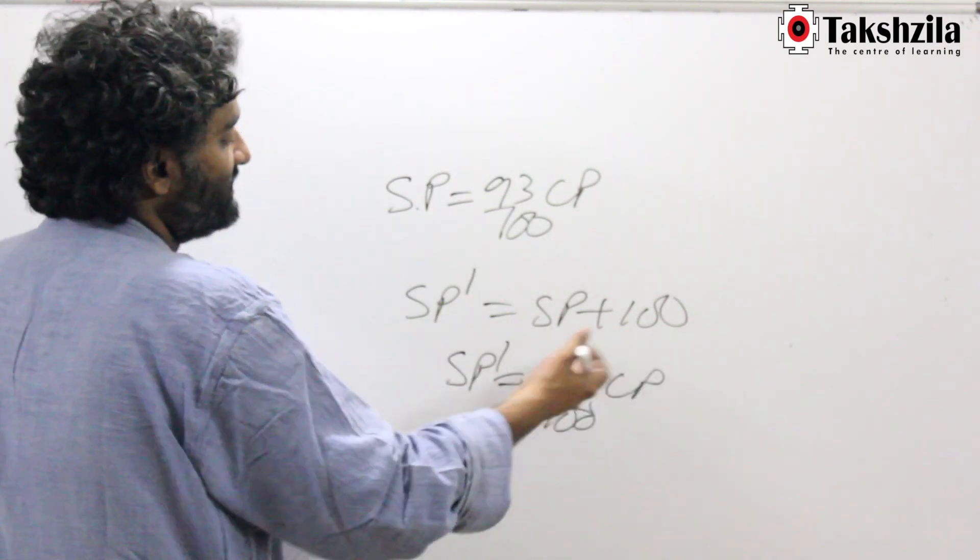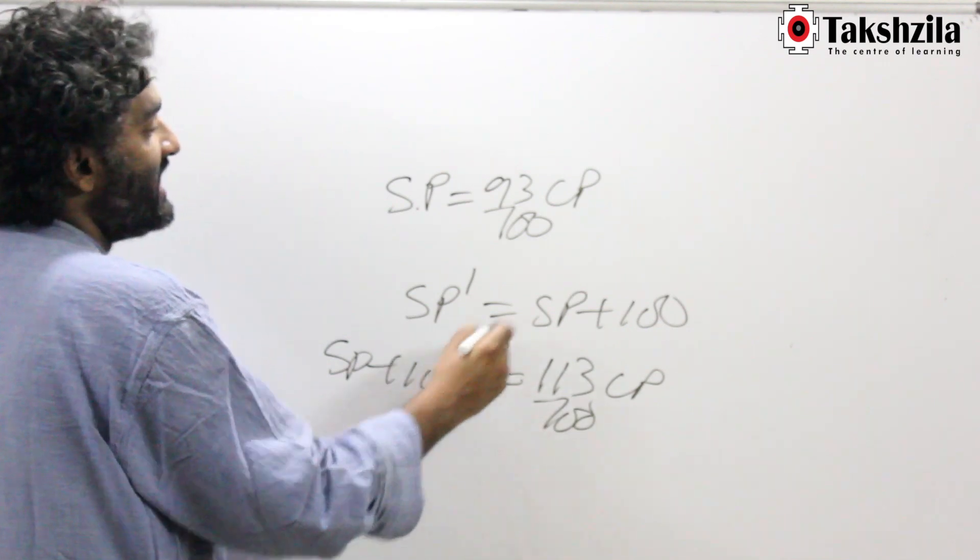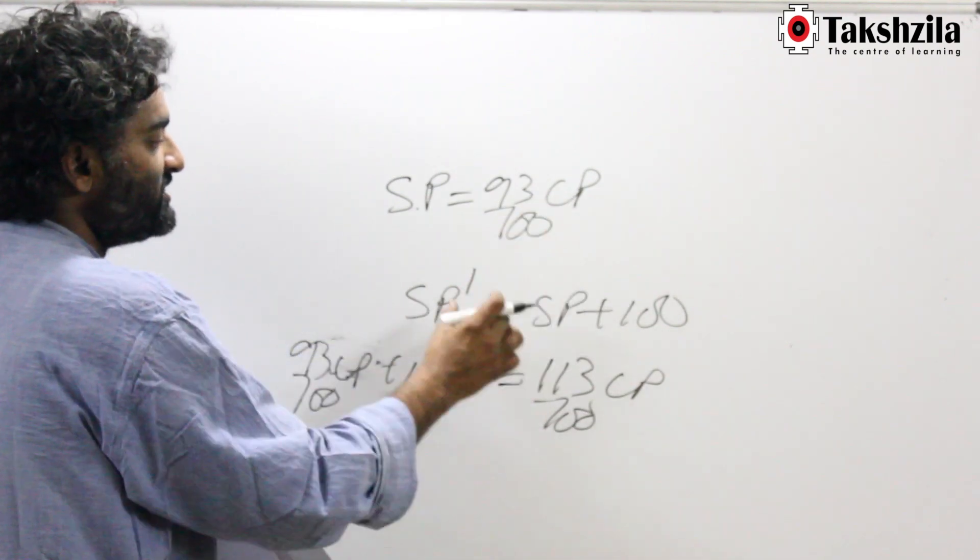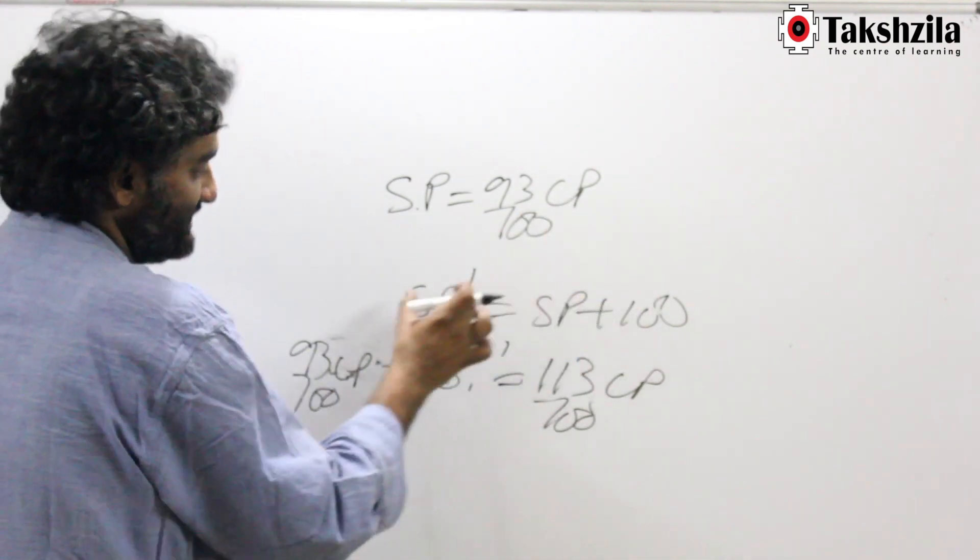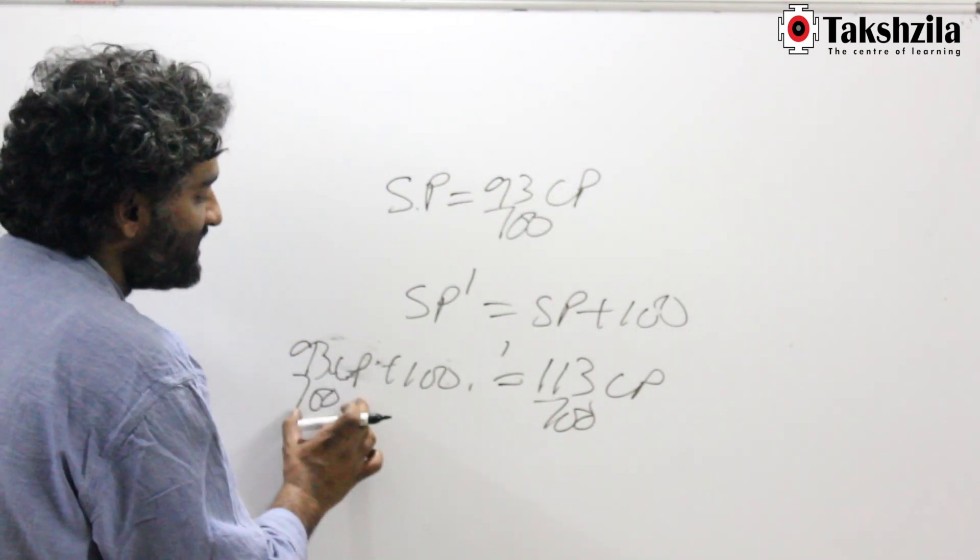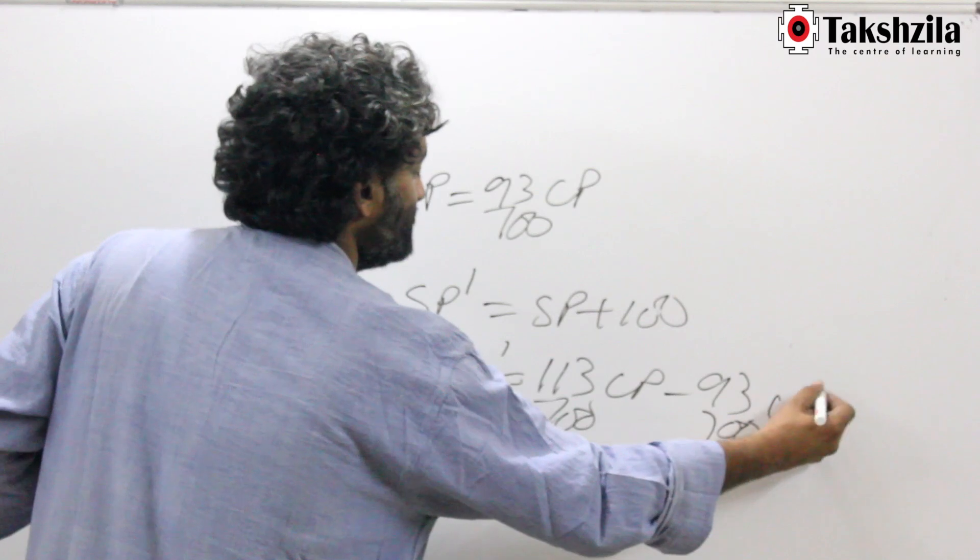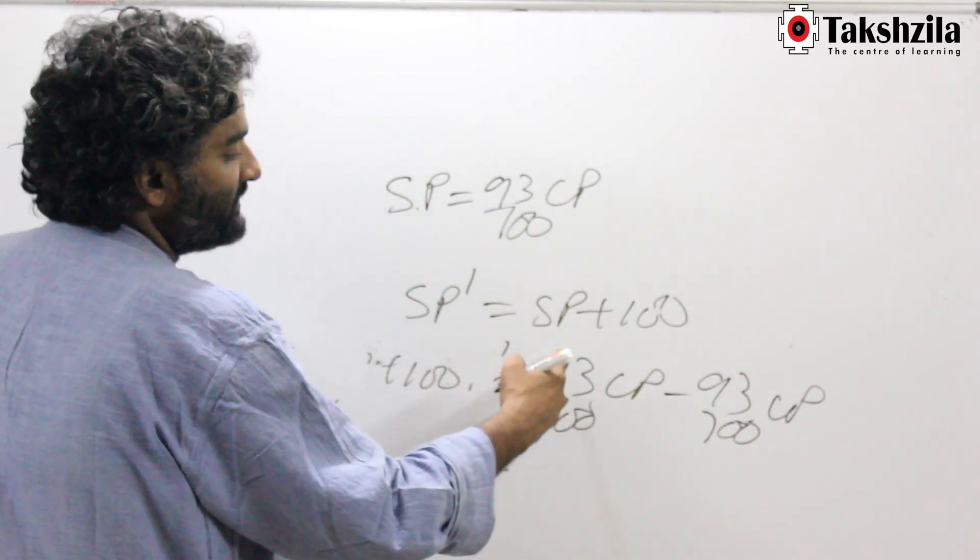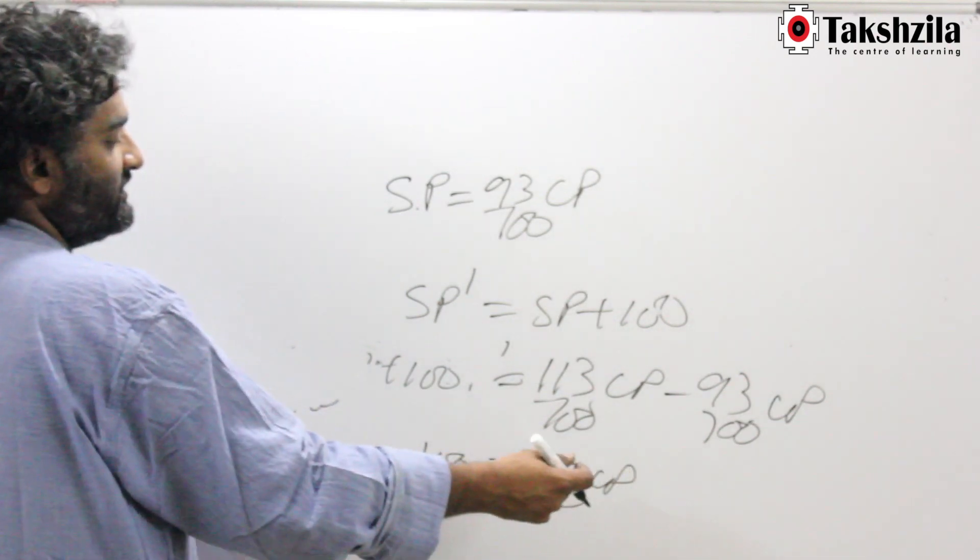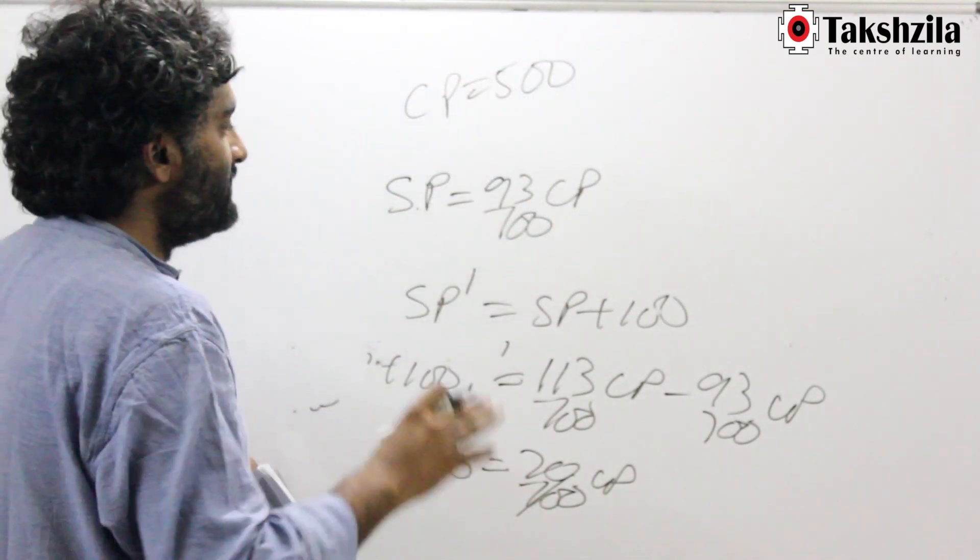Now I can start connecting pieces of data. Instead of this SP dash, I can write SP plus 100, and instead of SP I can write 93 by 100 of CP—just replacing pieces of information. This SP came here and then the SP dash came here, and then this SP is being moved here. So if I now move this 93 by 100 CP, which looks very conveniently placed here, it will be minus 93 by 100 CP. So this 100 is equal to 20 by 100 CP, which is one-fifth of CP, so CP is equal to 500, which is what we wanted to find.